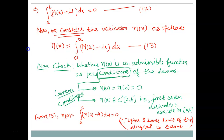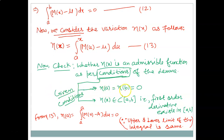To get an appropriate η(x) we consider η(x) = ∫_a^x (m(u) − μ)du, as equation 13. We want to check whether this choice of η(x) is admissible — that is, whether it satisfies all the conditions of the lemma: η(a) = η(b) = 0, and η(x) has a first-order derivative belonging to C¹[a,b].